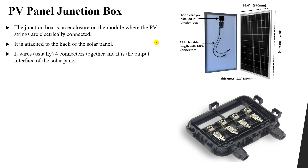The junction box is found on the back of the solar panel. It wires usually four connectors together and serves as our interface for the solar panels. You can see four connectors — one, two, three, and four — meaning this junction box connects between four bus bars, which will be explained in the next slide.